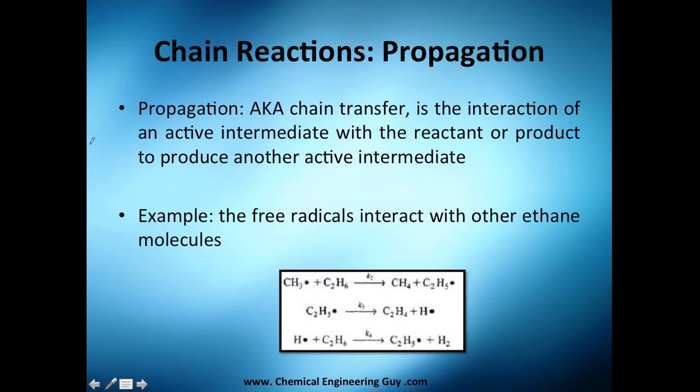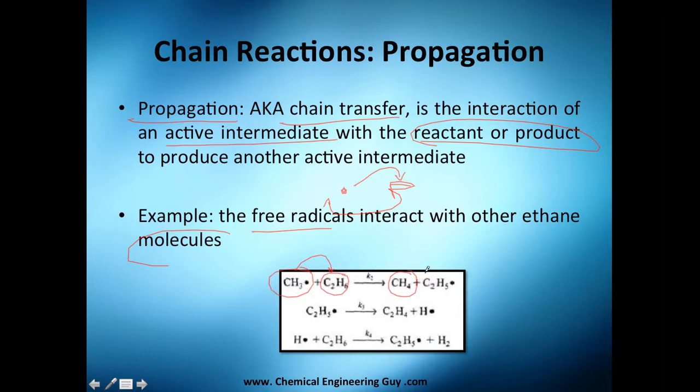Then comes propagation. Propagation, AKA chain transfer, is the interaction of an active intermediate with the reactant or product. This cycle: you start with one reactant, then comes the product and the product comes back, etc. The free radicals interact with other molecules. So you got this free radical goes with the first molecule and you react one methane, but you get another free radical. This other free radical is going to attack one ethane molecule.